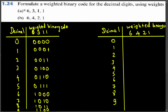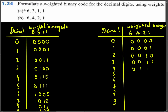Now let's look at the 6-4-2-1 code. For zero: 0000. For one: 0001. For four: 0100. For five: 0101. For six, there are two possibilities.